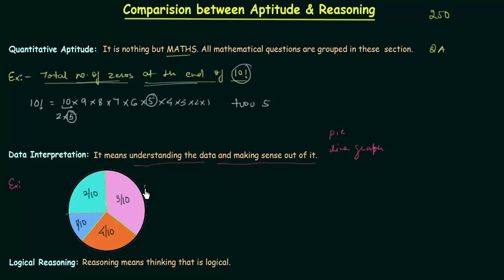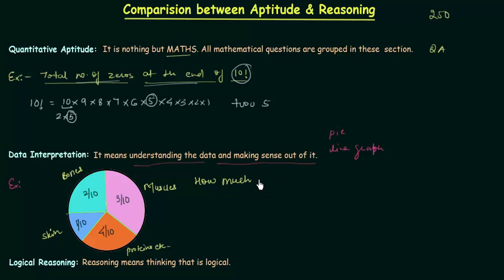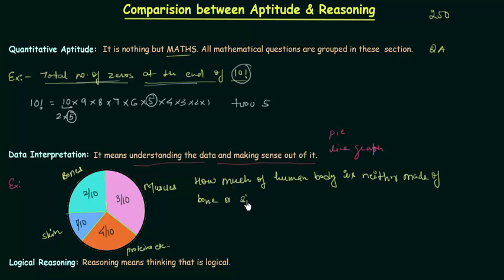Let me write this down. This is for muscles, this is for proteins and enzymes, this is for bones, and this one is for skin. Now we have to find out how much of the human body is neither made of bone nor skin.